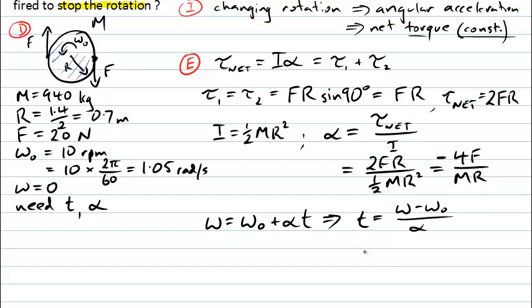So indeed when we write this down now we will have minus ω₀ divided by minus 4F over MR.